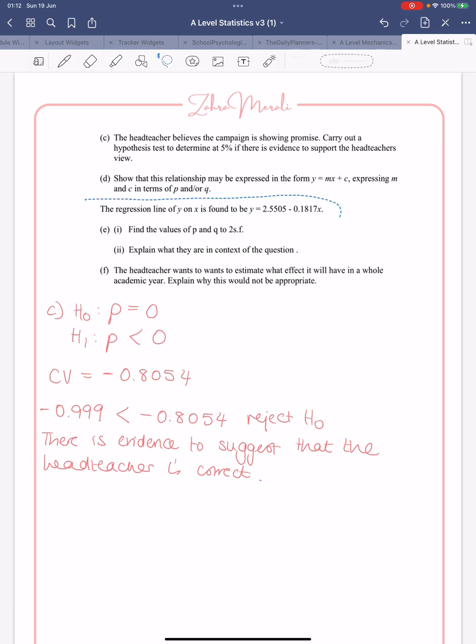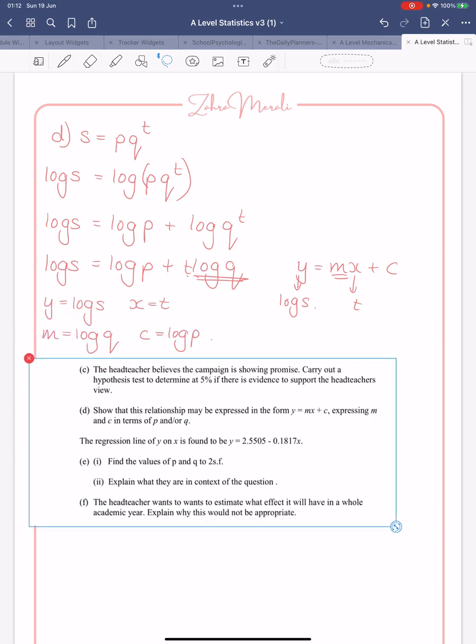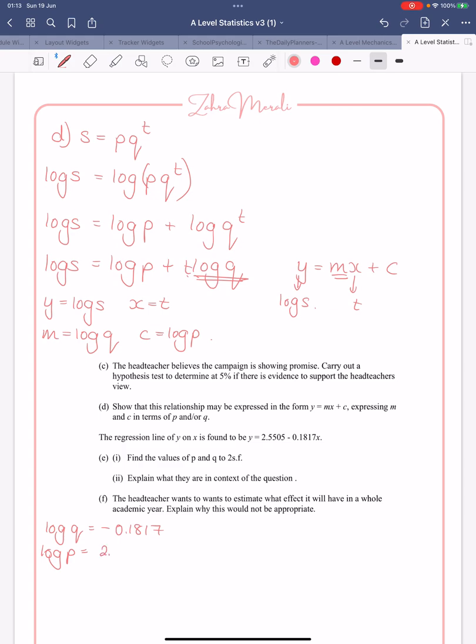You're then told the regression line is found to be, so we're given this regression line and we want to find p and q to two significant figures and also explain what they are in context. So looking at what we're given here, we can see that the gradient is minus 0.1817. We've already said our m is equivalent to log q, so we're going to say log q equals minus 0.1817. Log p is equal to 2.5505. Now remember we're assuming these to be base 10, so therefore q is 10 to the power of minus 0.1817 and p is 10 to the power of 2.5505.